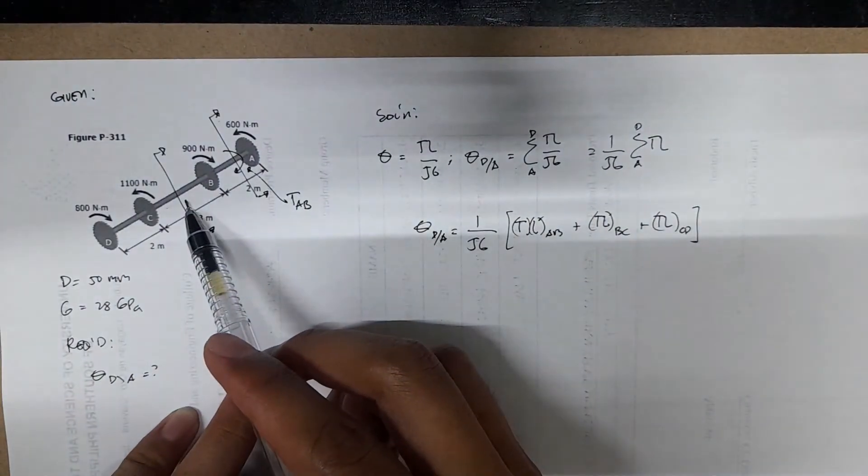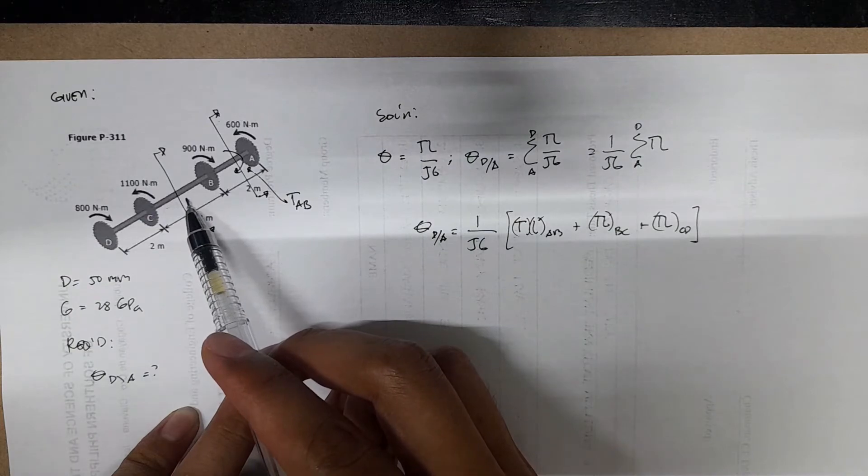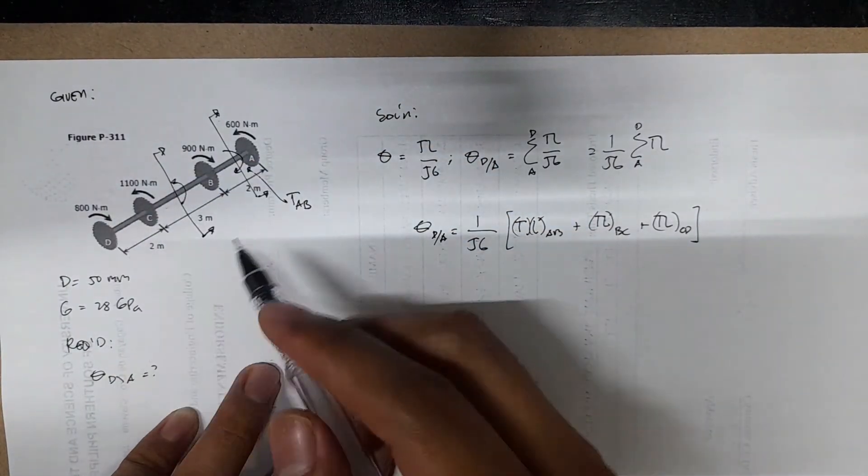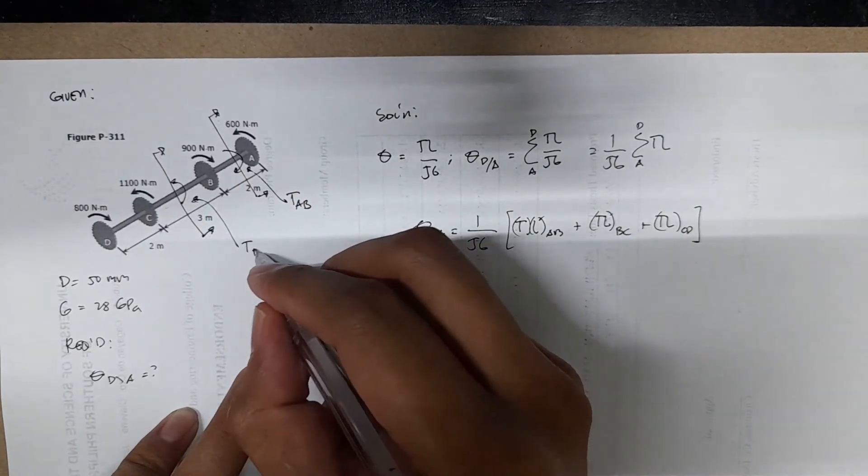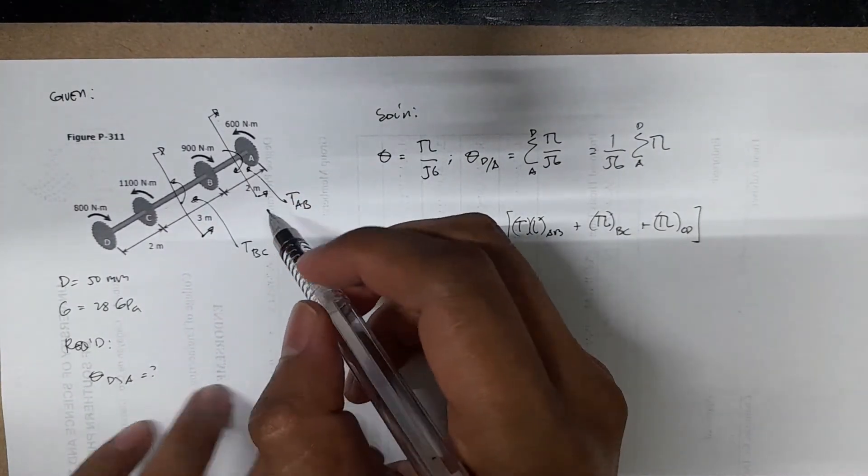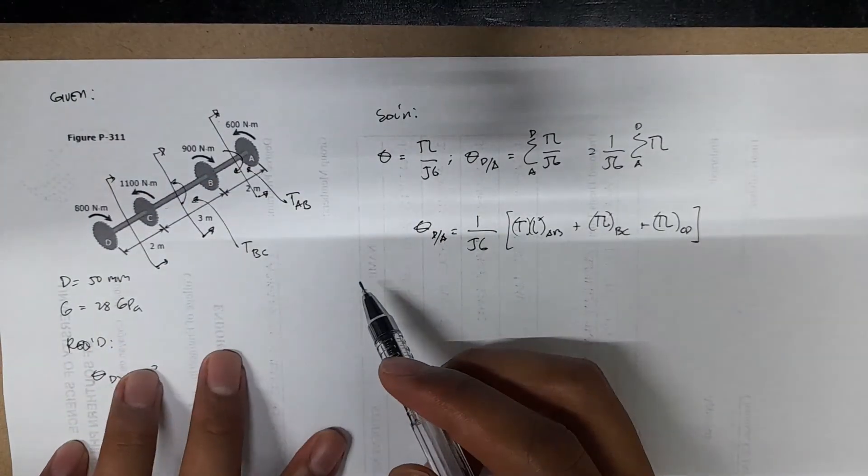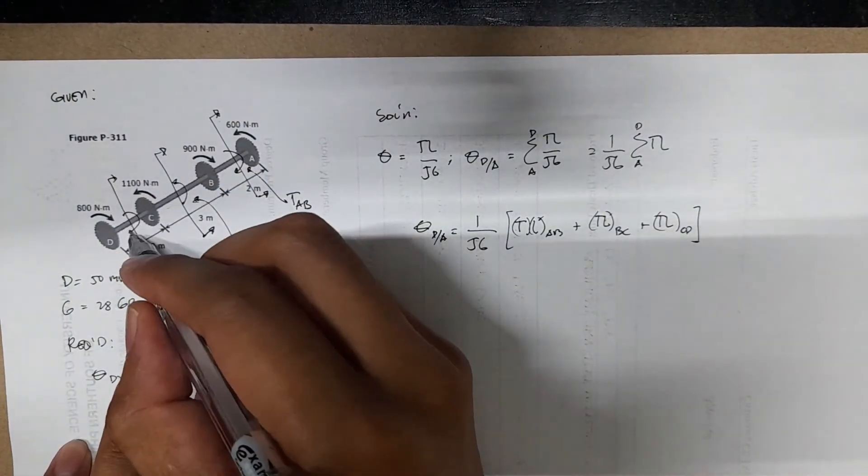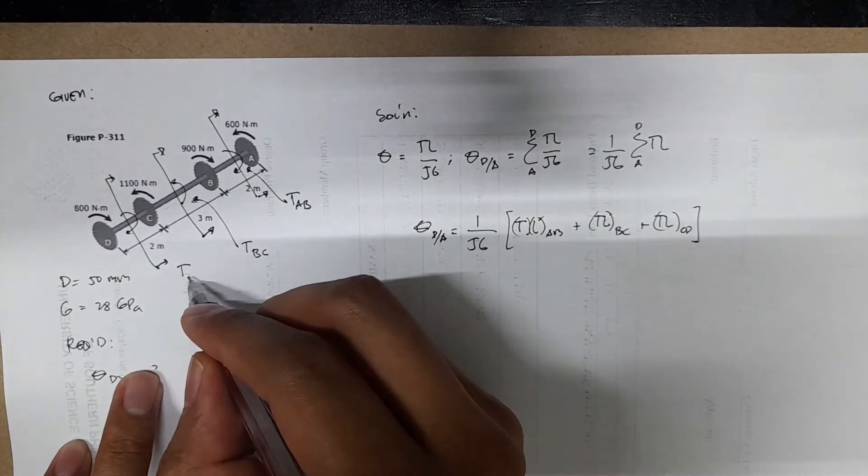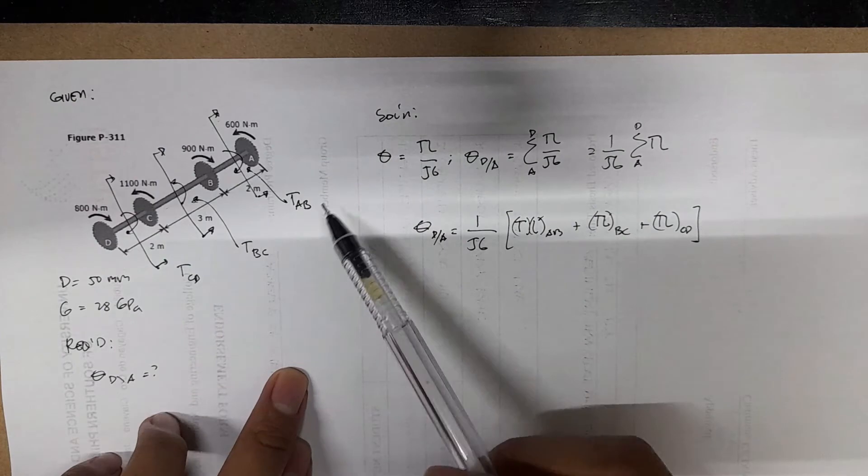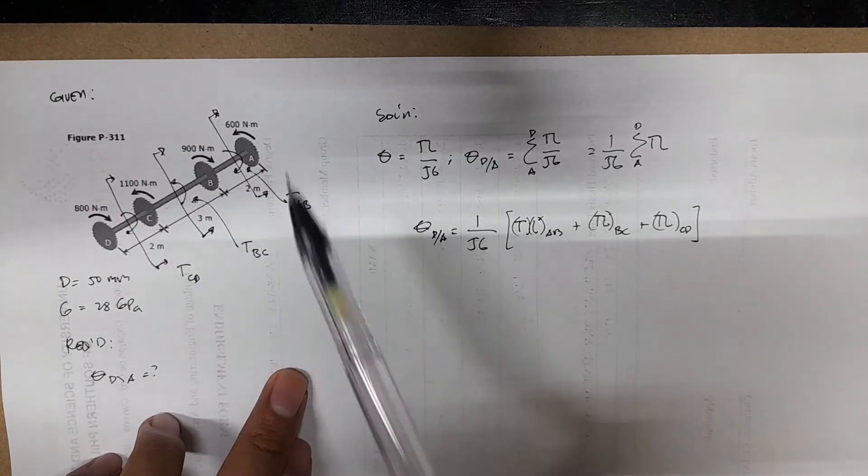We'll have a resisting moment here, which is on the other direction. We can call this TBC, and if you consider this one, you will have also on this direction TCD. If you're having a hard time imagining this illustration, you can also do this.